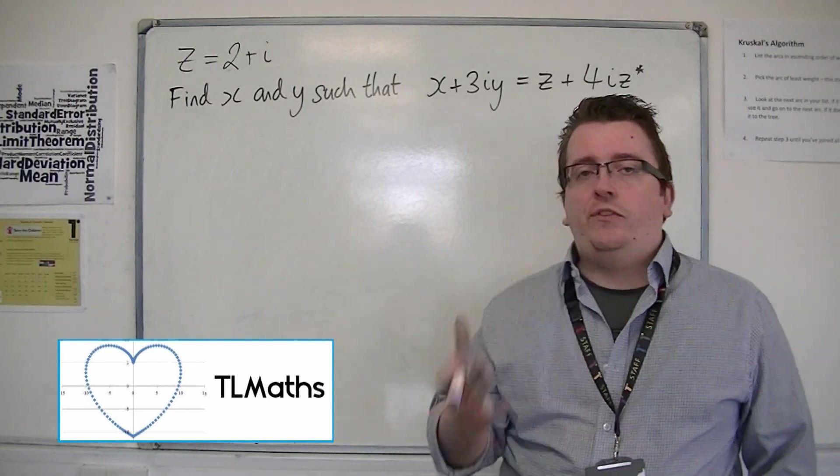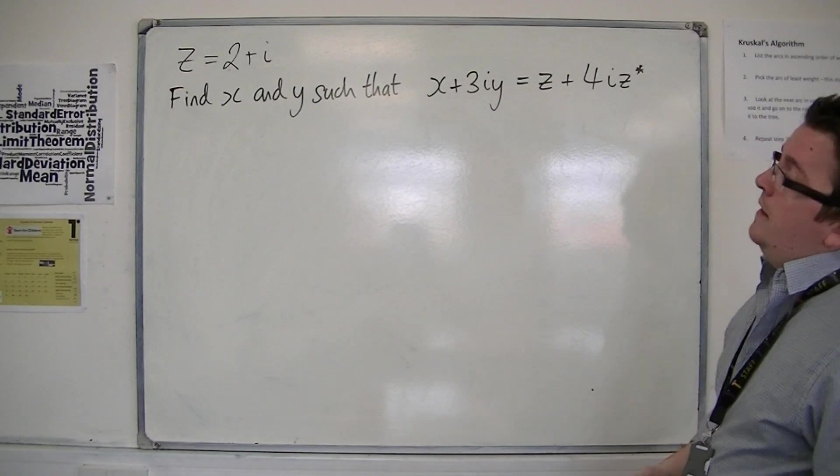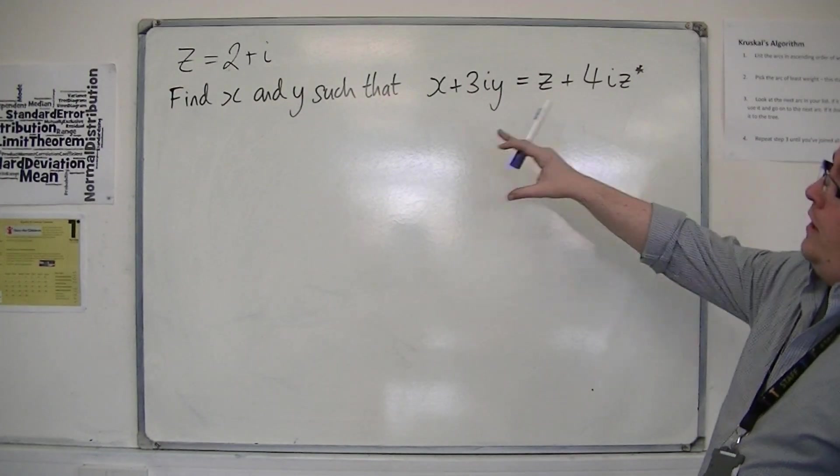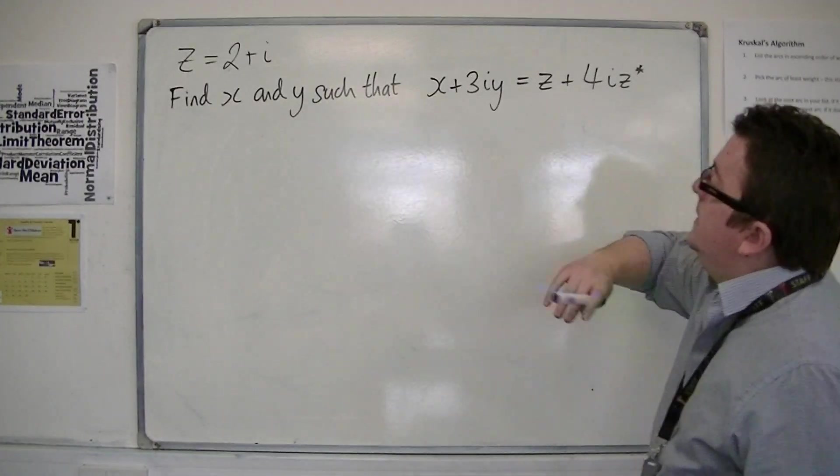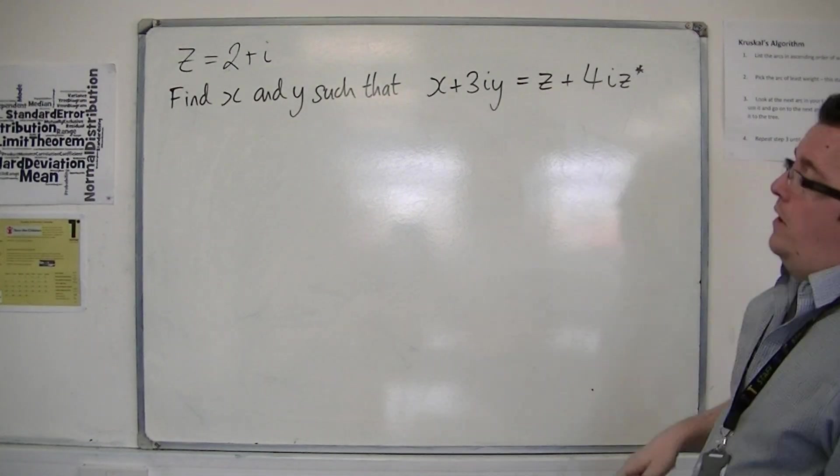In this problem, let's say we've been given the value of z, z is equal to 2 plus i, and in this problem we're asked to find x and y such that x plus 3iy is z plus 4i z star.